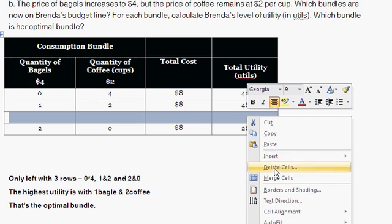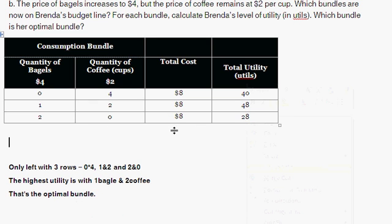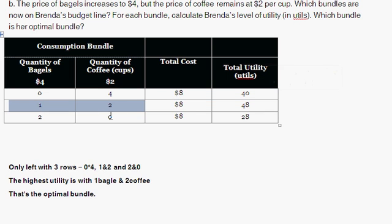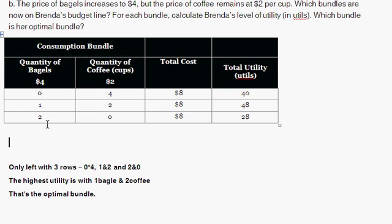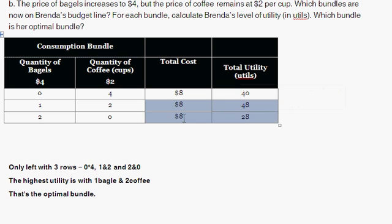So which of these three bundles will she choose? She could buy 4 cups of coffee for $8, giving 40 utils total utility. She could get 1 bagel and 2 cups of coffee for $8, giving a total utility of 48. Or 2 bagels and 0 cups of coffee, again $8, with a total utility of 28. So the one that maximizes her utility is 1 bagel and 2 cups of coffee, with 48 utils.